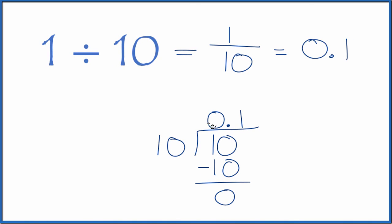So 1 divided by 10, that's the decimal 0.1, and that is what we found before.